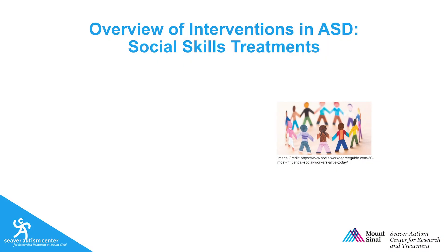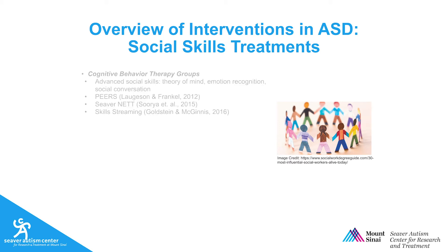Some of the interventions just mentioned can target social skills in younger or less verbal children. There have been other programs developed that specifically target social skills in children, adolescents, and adults with ASD. These interventions focus on higher-order social skills, such as theory of mind, social conversation, and reading emotions in other people. They follow a cognitive behavioral therapy framework, which requires that participants are verbally fluent and cognitively able to engage in the material.